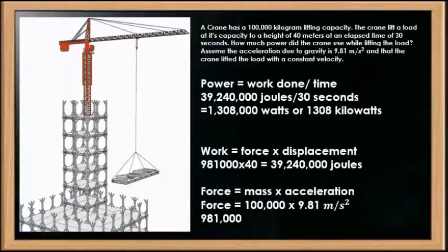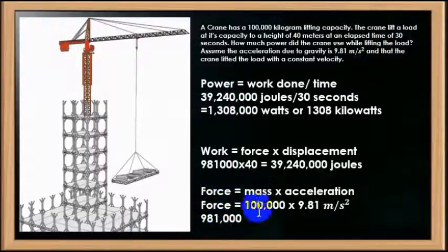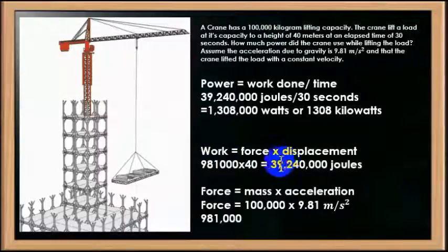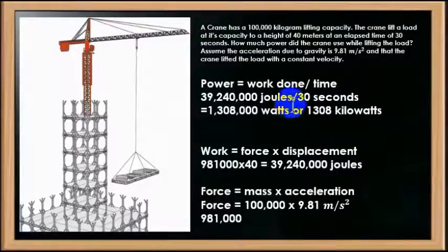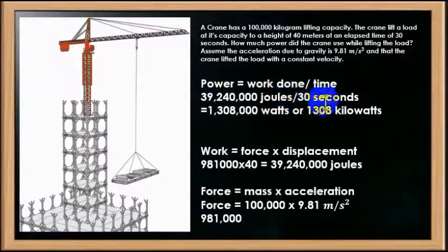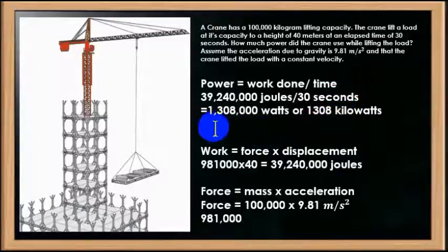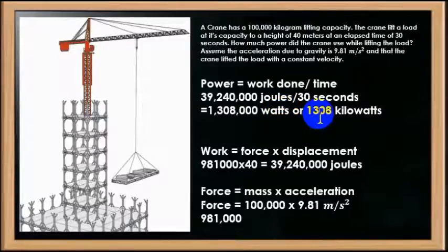And then what we must do is we look at power and ultimately that is the question. So we have to come up with what the force was to move the load. Then we have to work out how much work was done. And then we can work with the power equation. And that is work done divided by time. So 39,240,000 joules. That work was done in 30 seconds. And we come up with 1,308,000 watts or 1,308 kilowatts.